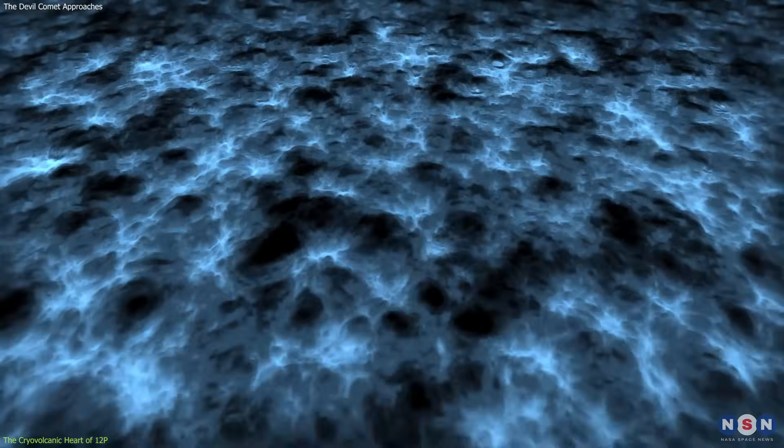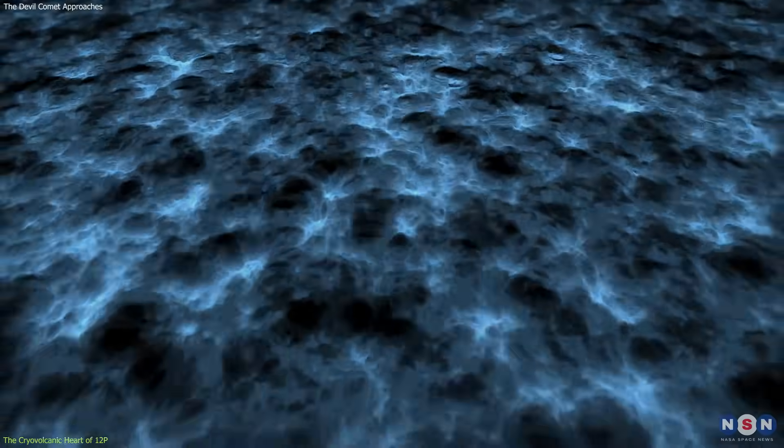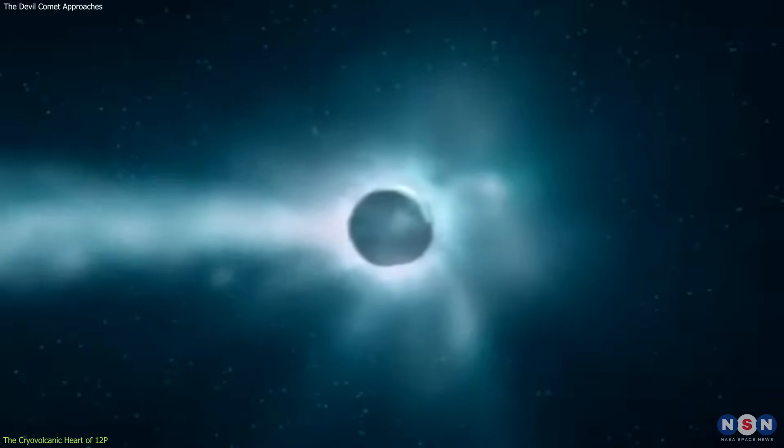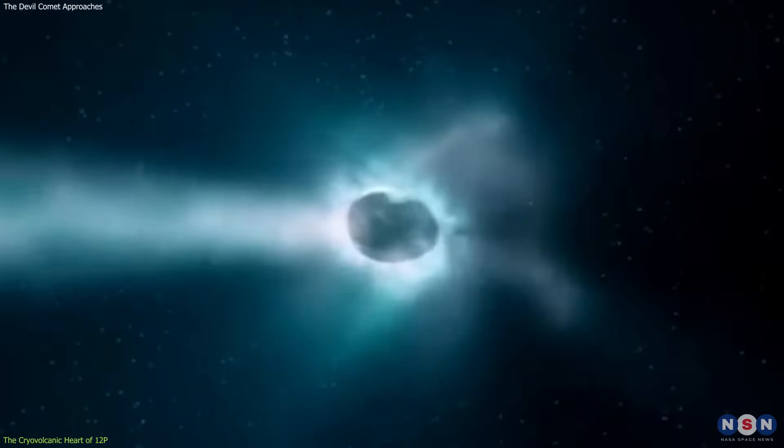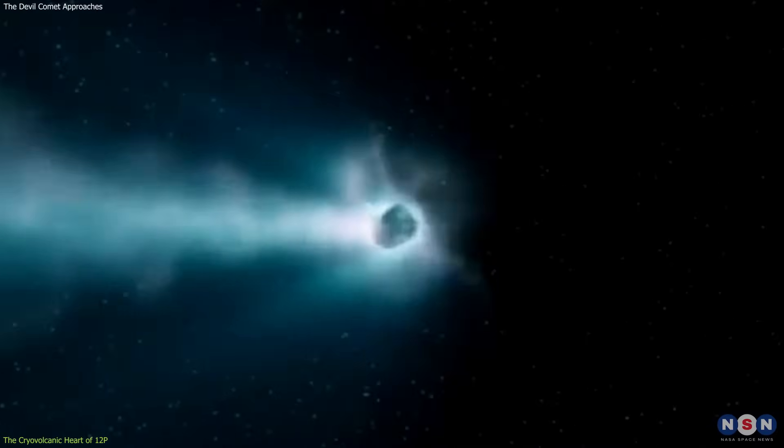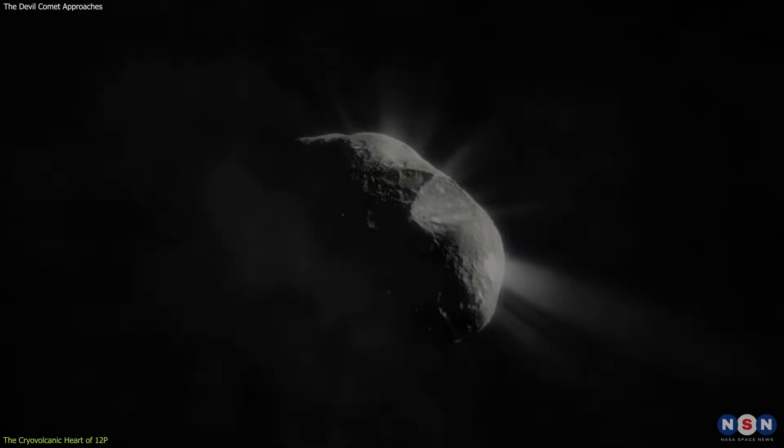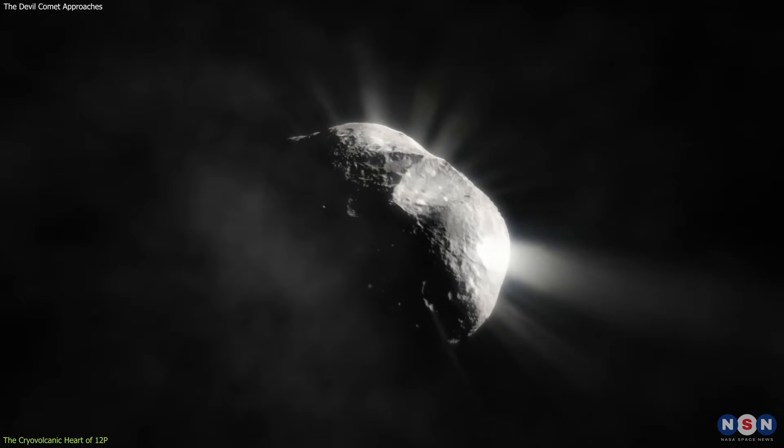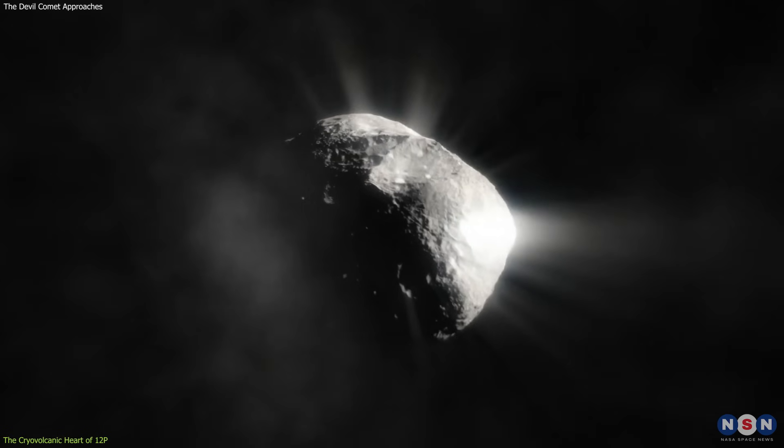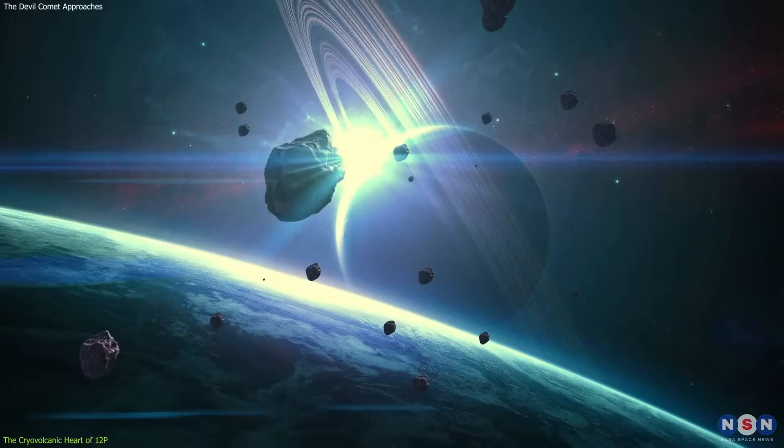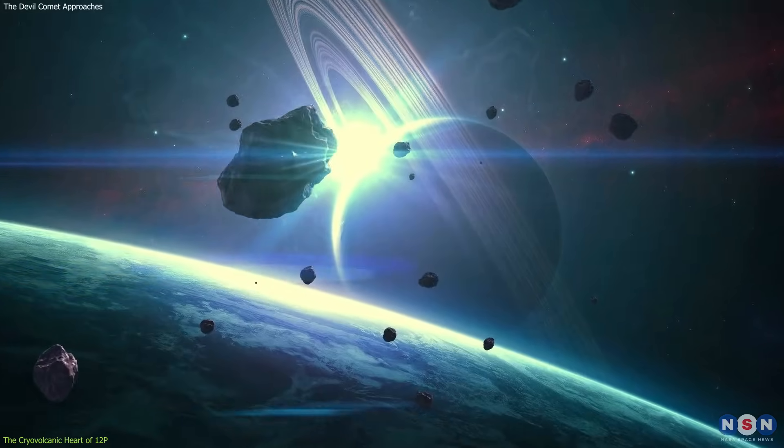The cryovolcanic activity of 12P Pons-Brooks is not just a visual marvel. It offers invaluable insights into the composition and behavior of cometary nuclei. Understanding these eruptions helps scientists unravel the mysteries of the early solar system, as comets are considered to be pristine remnants from their formation. They are time capsules, preserving the conditions and materials of the primordial solar nebula.